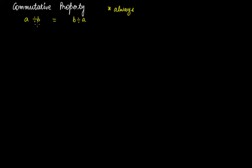We had discussed that addition and multiplication follow the commutative property. But subtraction does not follow the commutative property because you will not always get the same result. So let's see for division.